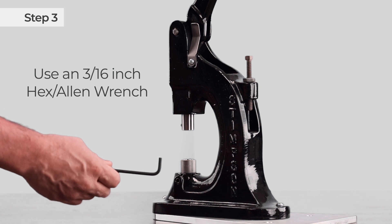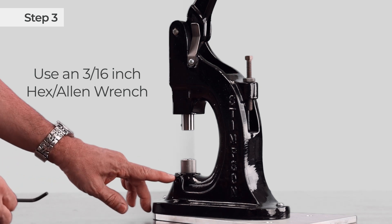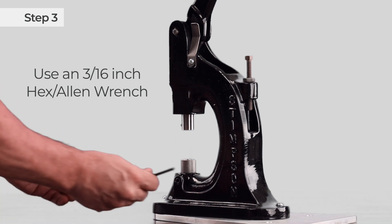Next, use a 3/16 inch hex wrench to loosen this set screw on the side of the machine and take out the bottom tool.